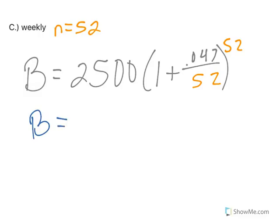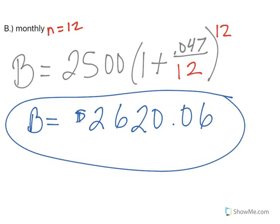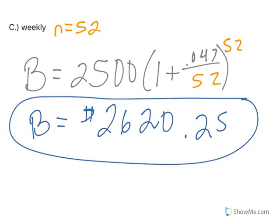And if you do it weekly, you end up with $2,620.25. So to go from monthly to weekly, monthly we're at $2,620.06, then $2,620.25.